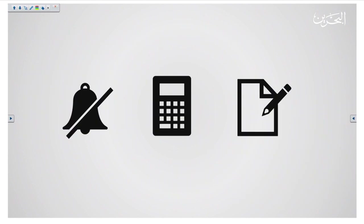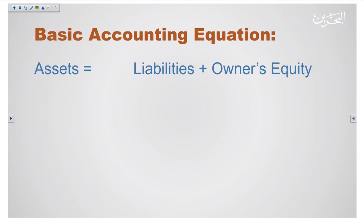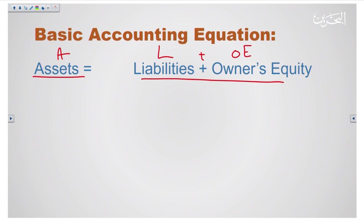Before we start our lesson, I want you to sit in a quiet place, hold your calculator, and bring a piece of paper with a pen to solve the exercises with me. If you remember, we have talked about the basic accounting equation: assets equals liabilities plus owner's equity. This formula should be balanced, meaning both sides must be equal, and this is the whole idea of the balance sheet — to make sure that the balance sheet is balanced by applying this formula.